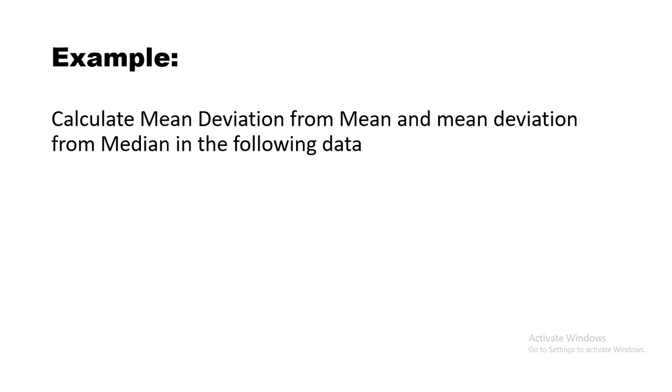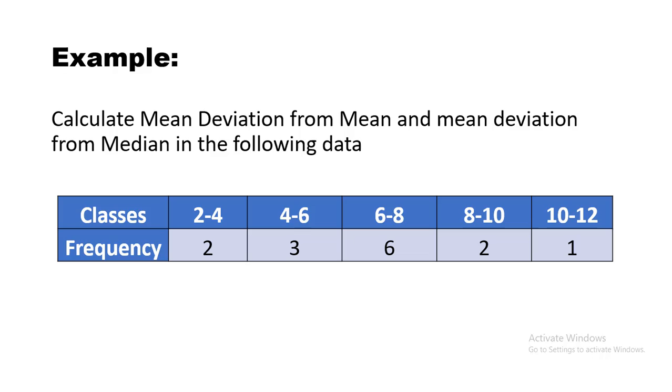Hello students, welcome back. In this part we will be learning about how to calculate mean deviation about mean and median for case 3, which is grouped frequency distribution. The example is: calculate mean deviation from mean and mean deviation from median in the following data.